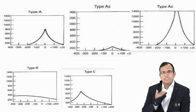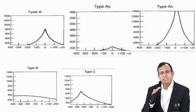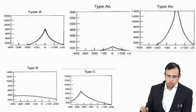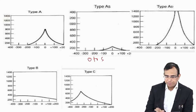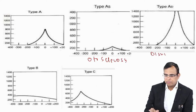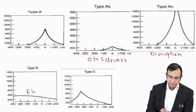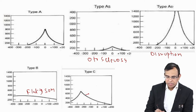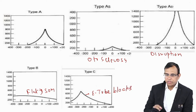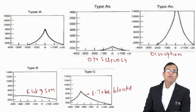The various tympanogram types to remember: Type A is normal; Type As is seen in otosclerosis; Type Ad is seen in disruption of the ossicular chain; Type B (flat) is seen in serous otitis media; Type C is seen in Eustachian tube block.